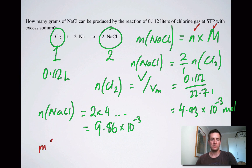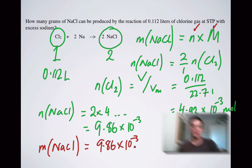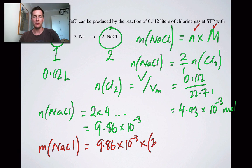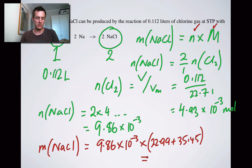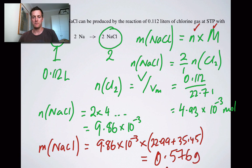The mass of sodium chloride equals 9.86 × 10⁻³ multiplied by 22.99 — that's taken from the periodic table — which equals 0.76 grams. So that's the worked example.